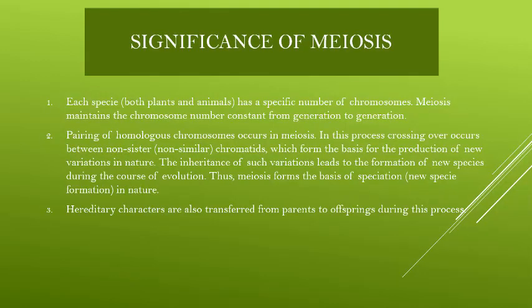Now we will see the significance of meiosis. The first significance is that meiosis is responsible for maintaining the number of chromosomes among species. Without meiosis, if gametes were formed with the full chromosome number, fertilization in every generation would double the chromosome number. With meiosis, a constant number of chromosomes is maintained from one generation to the next.